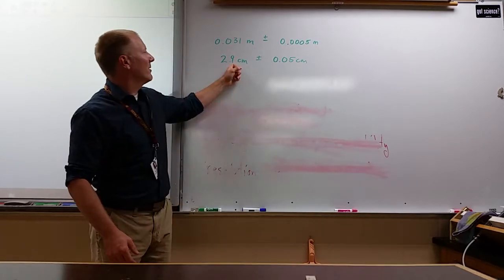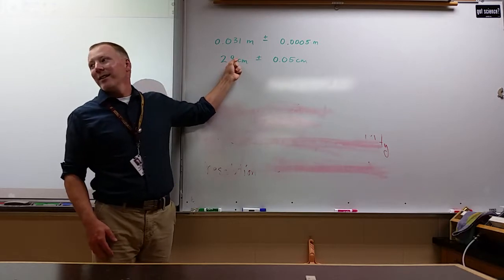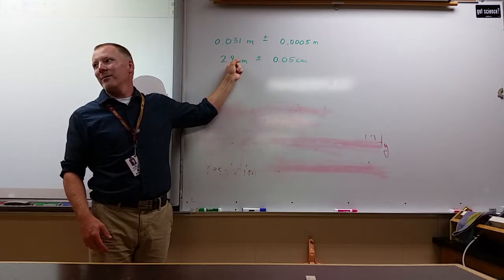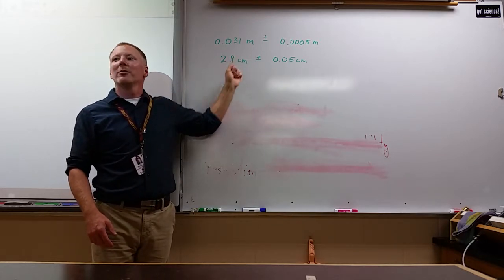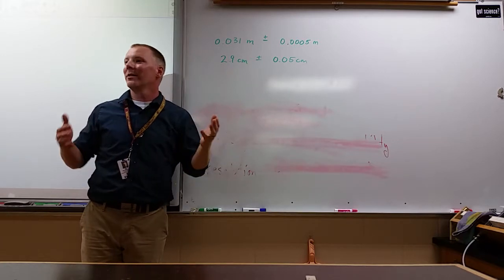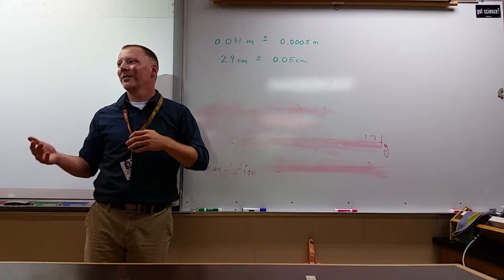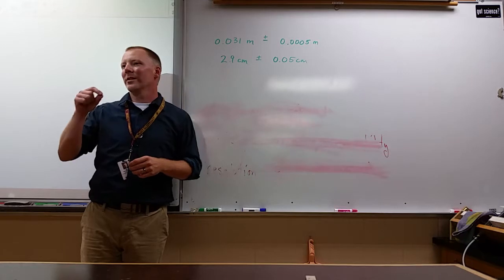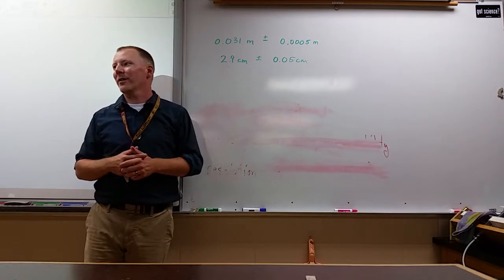This tells us how confident we are, so that is really an important digit there. There's a big difference between 3, which could be anywhere from 2.5 to 3.5, and 3.0, which is between 2.95 and 3.05.